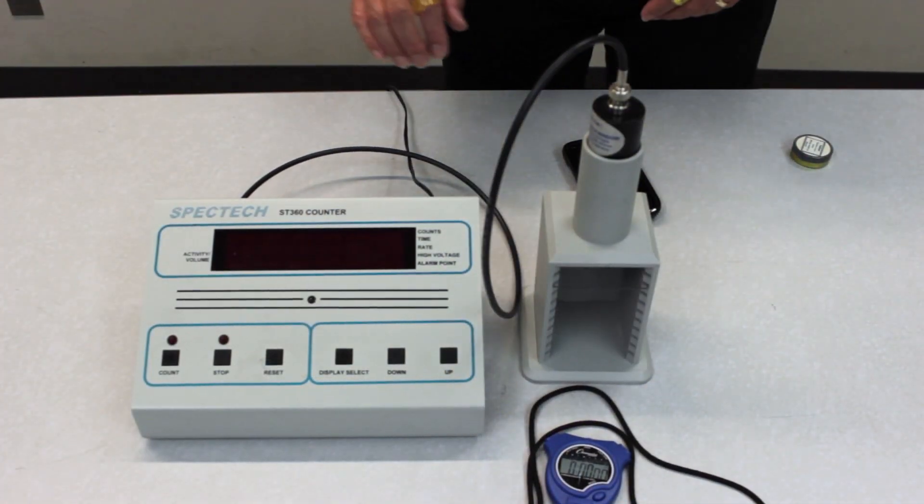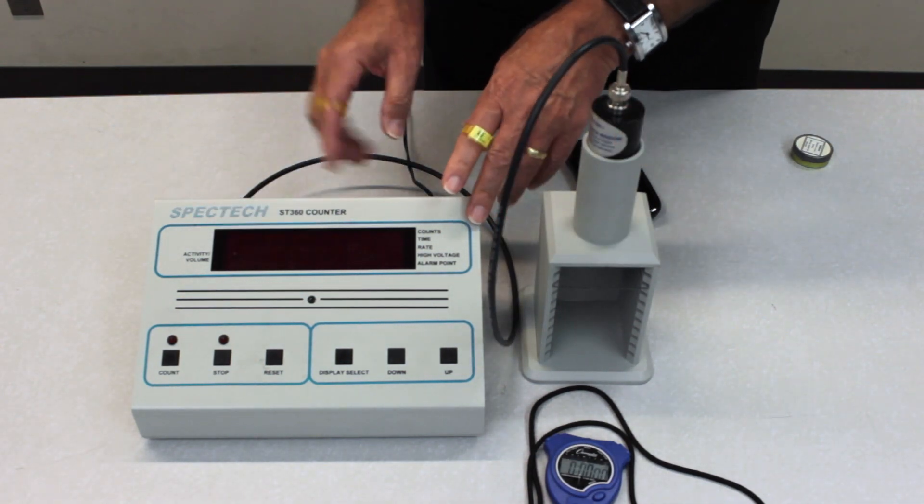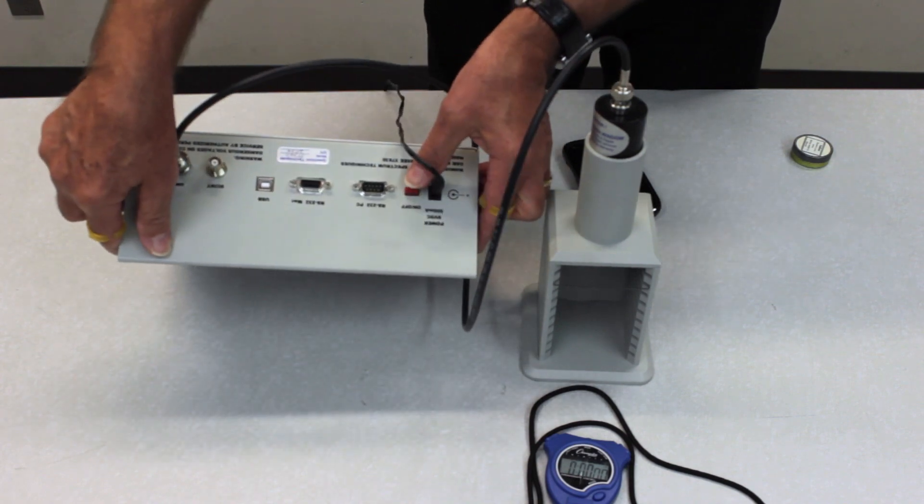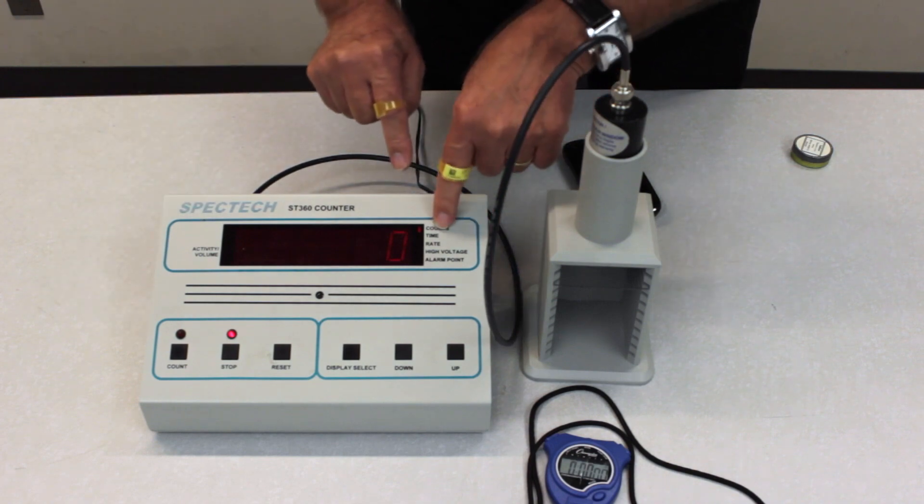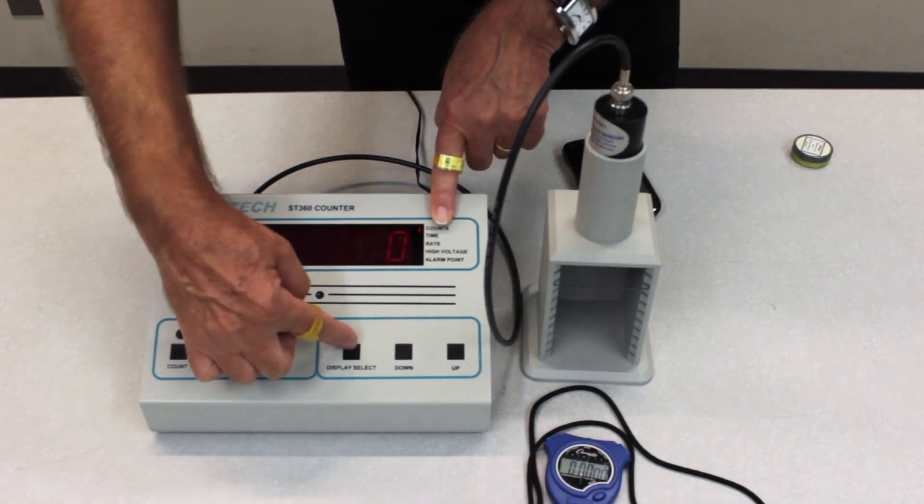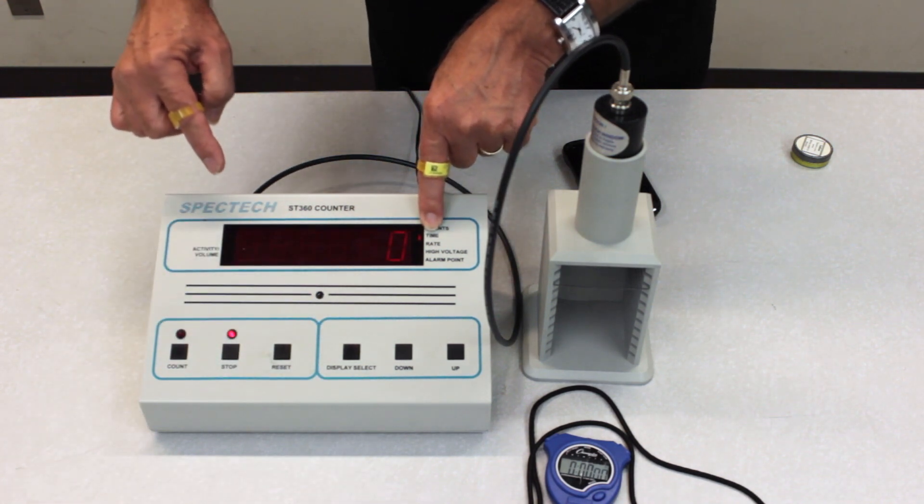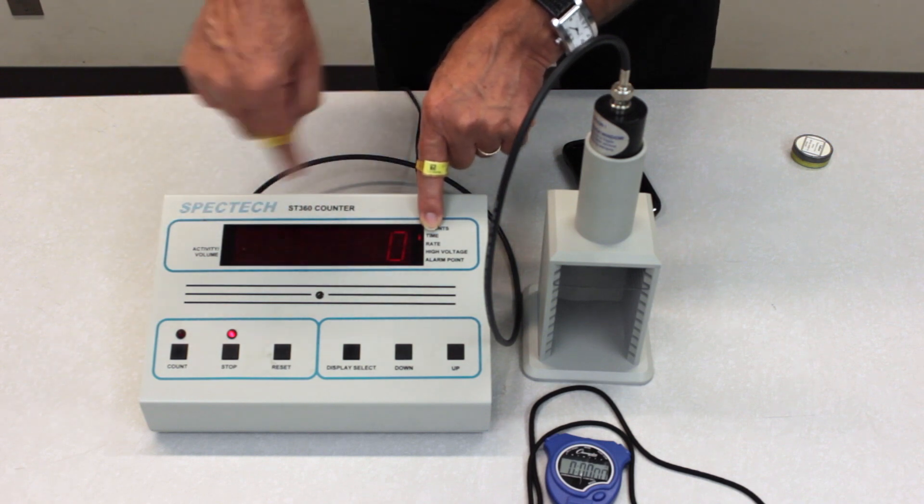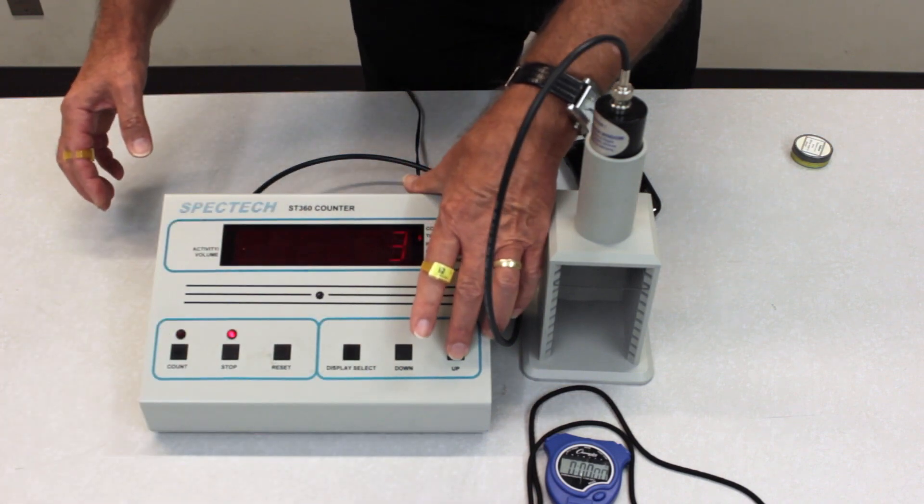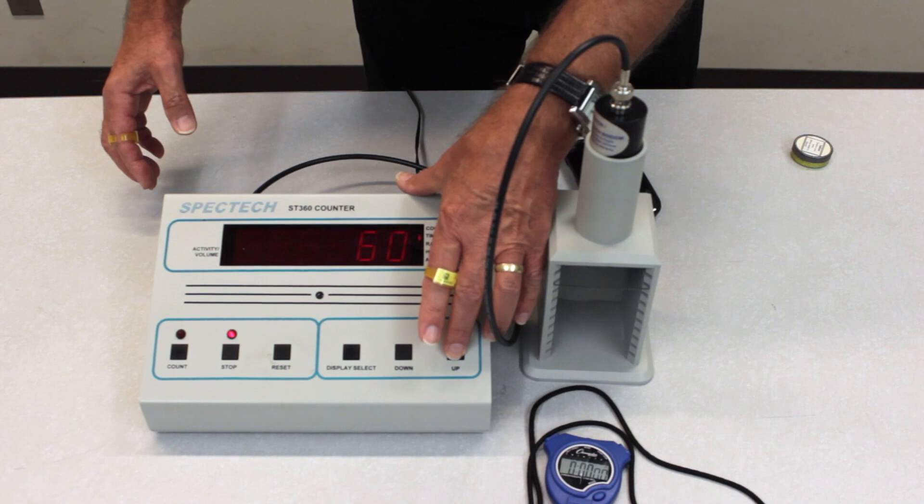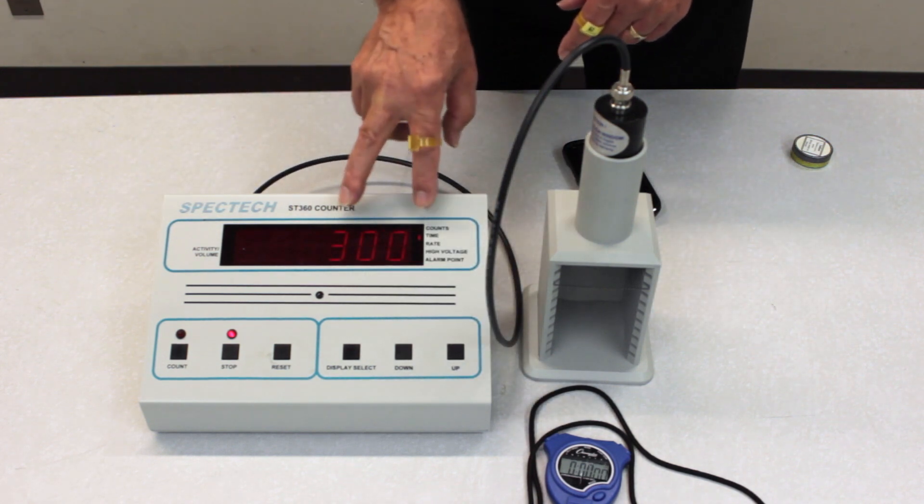The apparatus consists of the Geiger counter tube and the high voltage power supply and timer. We turn on the counter at the back with the red power button and then we select the appropriate function with the display select button. The first thing to do is to set the time interval and what we'd like to do is to count for a total of five minutes. We'll turn up the time to 300 seconds.